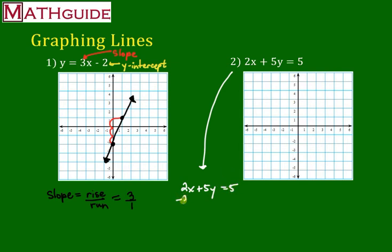So to get the y alone, I'm going to get rid of the 2x. So I'm going to subtract 2x from both sides. So that'll cancel here. So I get 5y equals, well, I've got that negative 2x on the right side, and I also have a positive 5 on the right side. So there you go. I've got negative 2x plus 5.